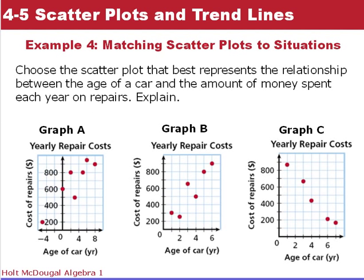In this example we're going to match scatter plots to a given situation. We want to pick the scatter plot that best represents the relationship between the age of a car and the amount of money spent each year on repairs. As cars age they tend to require more repair and costs will go up. Also, the age of a car cannot be negative, so we can rule out graph A because it has negative values.